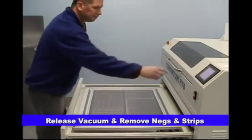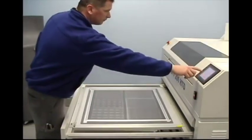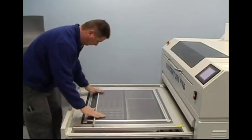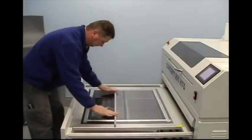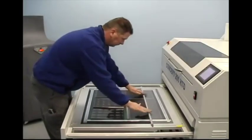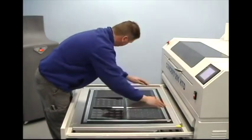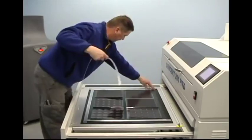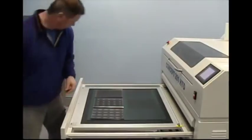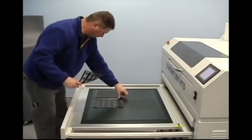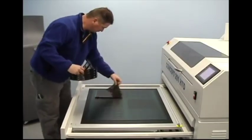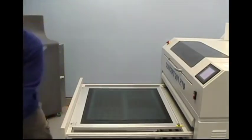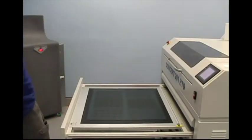Once the main exposure is complete, you can release the vacuum, roll back the mylar sheet, remove the bleeder strips, and carefully remove the negatives. With some plate materials, you may actually be able to see the latent image from the main exposure.